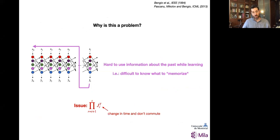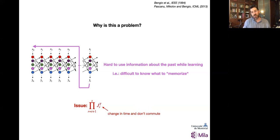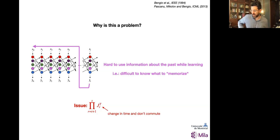Why is this a problem? From a learning perspective, it's hard to use information about the past while learning because it's difficult to know what to memorize. You lose the signal about what's important, what impacts your loss function at the end of the day, because you degrade information in the gradient. To make a parallel with dynamical systems theory, the issue is these long products of Jacobians that don't necessarily commute in time. For those familiar with Lyapunov exponents and Lyapunov spectra, these are very closely related objects — Lyapunov exponents are spectral properties of long products of non-commuting Jacobians.